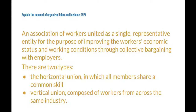The two types of unions are horizontal and vertical unions. In a horizontal union, all members share a common skill and are typically on the same level in the organizational hierarchy, usually holding the same type of job. In a vertical union, workers are all from the same industry but can be at many different levels and positions — the only commonality is their industry.